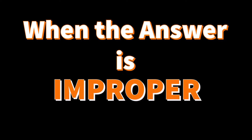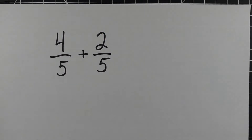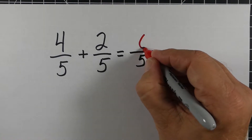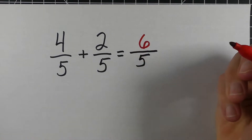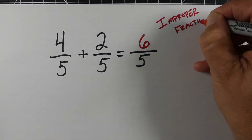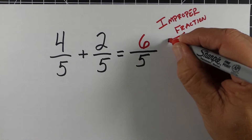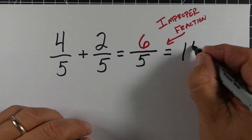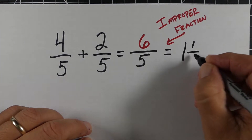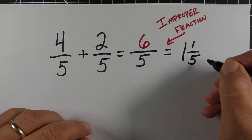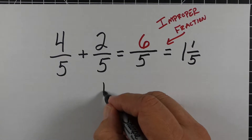Sometimes when we add, we get an improper fraction. When we get an improper fraction, it means our top number — the numerator — is going to be bigger than the denominator. So in this example, 4/5 plus 2/5 is 6/5. This is an improper fraction, and so the answer is going to end up being 1 and 1/5.